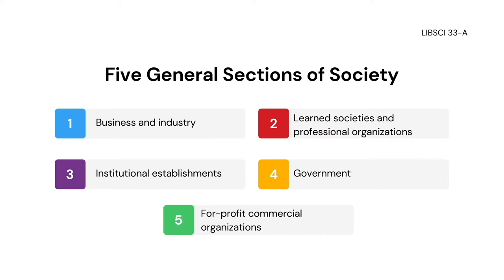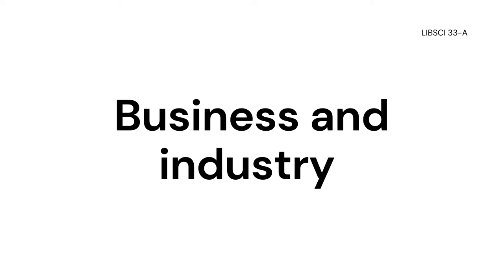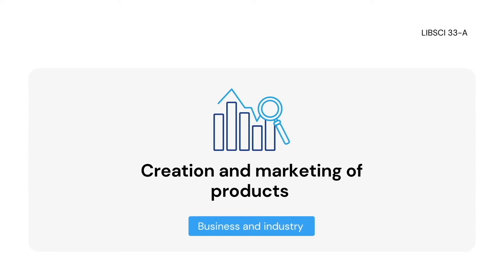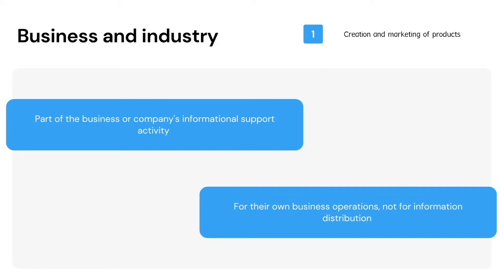First is business and industry. The primary interest of business and industry is the creation and marketing of products. The indexes and abstracts produced in this field are part of the business or company's informational support activity. Internal operational reports and reports acquired from external sources need bibliographic control. This vital material can be utilized effectively only if it can be indexed and abstracted. The concern of business and industry is not for information distribution to the general public, but for their own business operations.